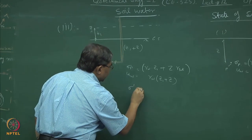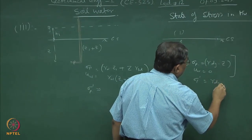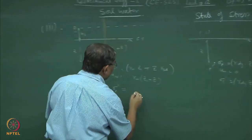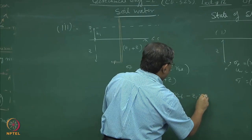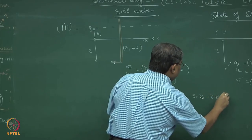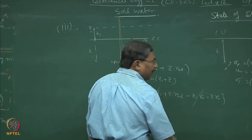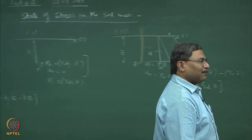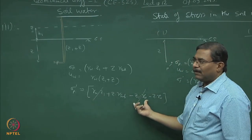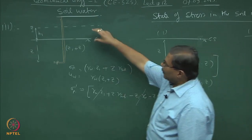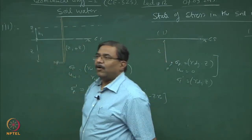What has happened to effective stresses at point P? This will be γ_w·z1 + γ_sat·z minus γ_w·(z1 + z). When I cancel these terms — and this is not just mathematical cancellation — the water column contributes to both pore pressure and surcharge, so that effect cancels out. Water logging never creates a problem in terms of effective stress.